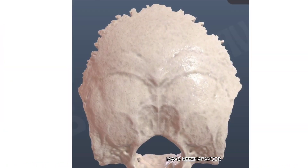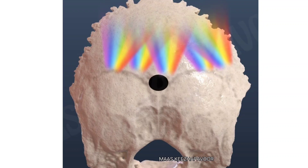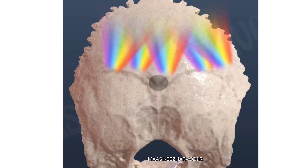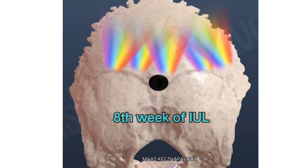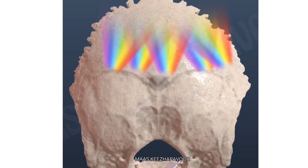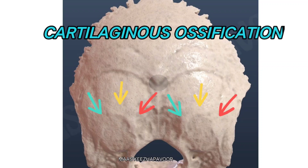The squamous part above the external occipital protuberance undergoes membranous ossification. One on either side of the midline, ossification centers appear by the 8th week of intrauterine life. Soon they unite to form a single center in the midline. The squamous part below the external occipital protuberance undergoes cartilaginous ossification.